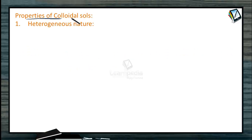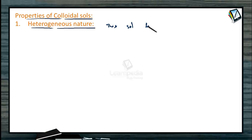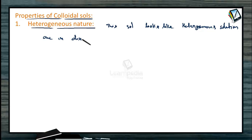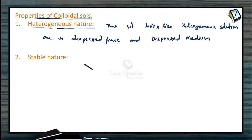What are the properties of colloidal sols? The first one is heterogeneous. These colloids are heterogeneous in nature. This sol looks like a heterogeneous solution. In this solution, two phases are present: the dispersed phase and the dispersion medium, like solute and solvent in a solution. These colloidal particles are in a state of motion and don't settle down to the bottom of the container.